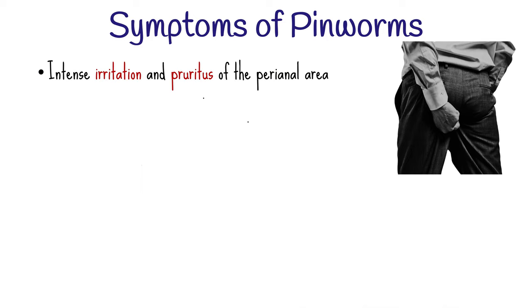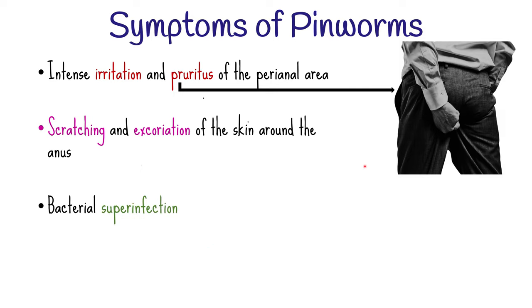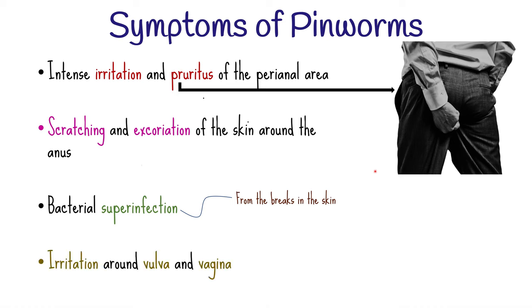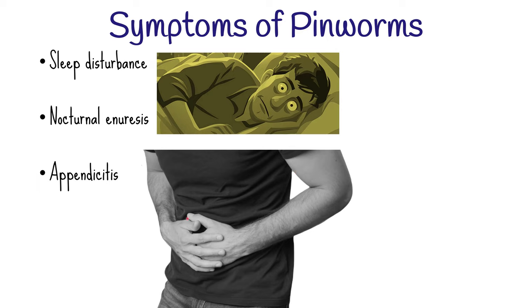The clinical features manifest as intense irritation and pruritus of the perianal and perineal area, which coincides with the female worm crawling out of the anus to lay eggs at night. This itching — known as pruritus ani — often leads to scratching and excoriation of the skin around the anus, and can cause bacterial superinfection, where bacteria enter through small breaks in the skin. In female patients, the worms may crawl into the vulva and vagina causing irritation, and may migrate up to the uterus and fallopian tubes, causing symptoms of cervicitis and chronic salpingitis. The worms may also obstruct the appendix causing appendicitis, and have been found in surgically removed appendices.